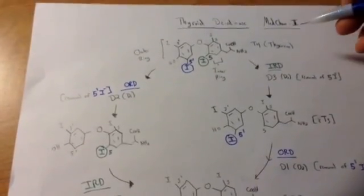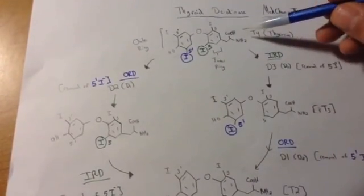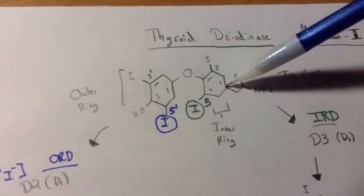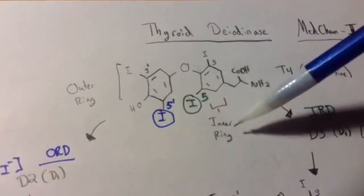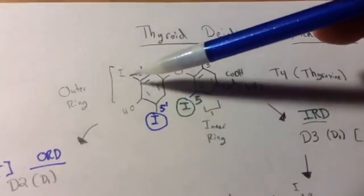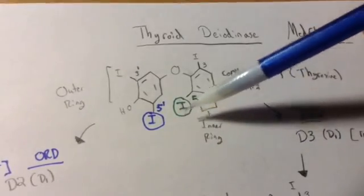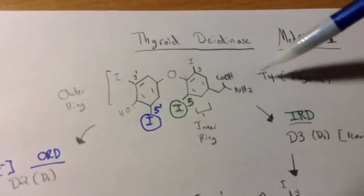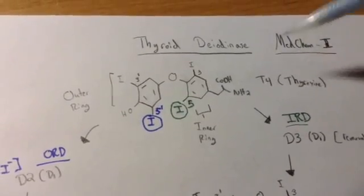So up here, we have the T4 molecule. Let's zoom in on it here. Right over here we have what's known as the inner ring, and then on the outside is the outer ring. And as you see, there's one, two, three, four iodines. So that's why it gets its name T4, or also known as thyroxine.